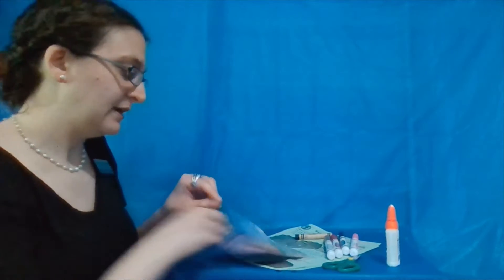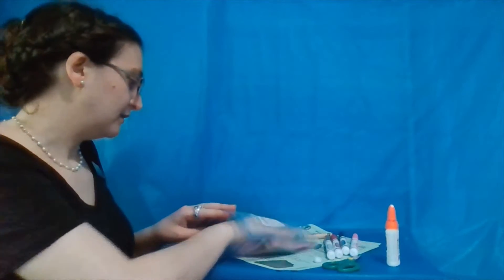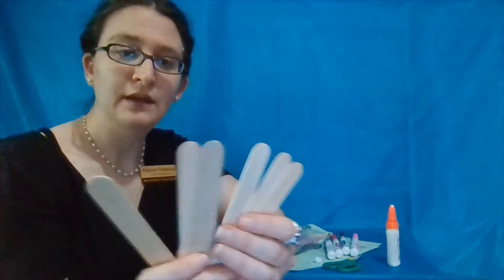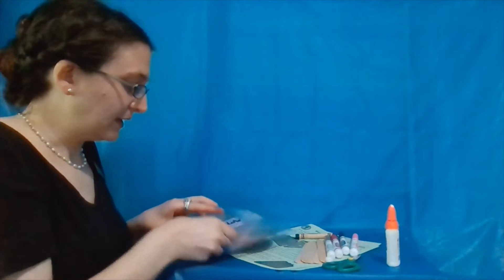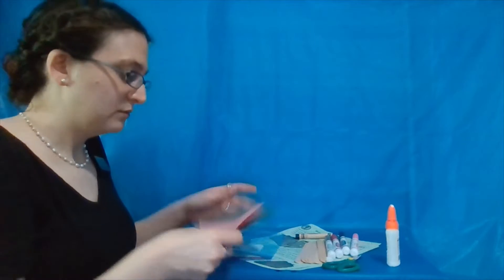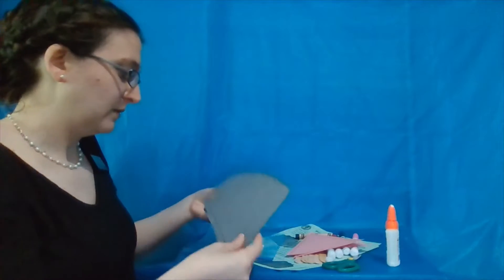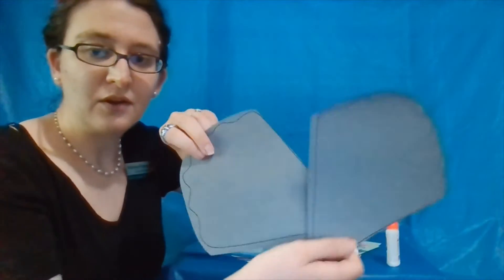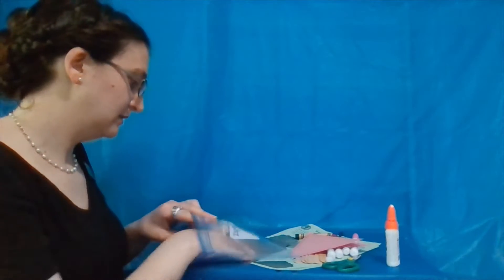There is a white pom-pom, there should be six jumbo craft sticks or popsicle sticks, we're going to have two pink triangles, two oyster shell halves, and we're going to have a gray rectangle as well.